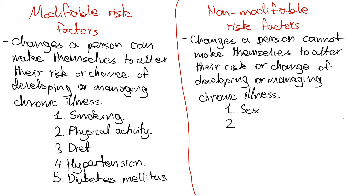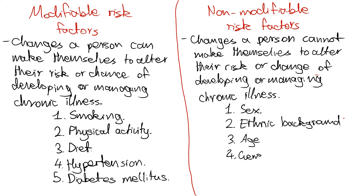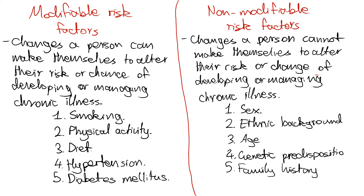Secondly, another non-modifiable risk factor is your ethnic background, your age, and any genetic predisposition. Maybe this is something we'll be able to change in the future with gene editing, but for now, if the cards are stacked against you genetically, then unfortunately developing the condition is pretty much inevitable. And lastly, another non-modifiable risk factor is your family history. This can be tightly related to genes, but say if your family is living in a particular environment that you don't specifically have any control over, then that becomes a non-modifiable risk factor.